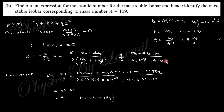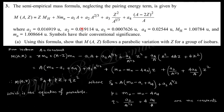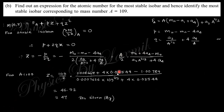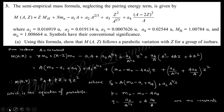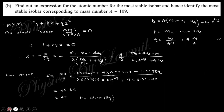Substituting A = 109 along with the given constant values into the expression Z = −P/(2Q), we obtain Z = 47. Since Z = 47 is the atomic number of Silver, the most stable isobar for A = 109 is Silver.